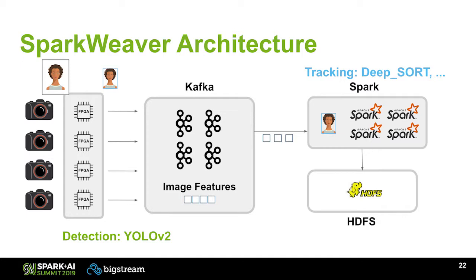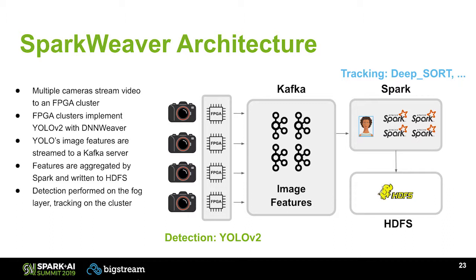In our Spark Weaver architecture, we have detection running on the FPGAs and then we're doing tracking in our cluster. Specifically: we're streaming video from cameras, our FPGA clusters implement YOLO — specifically version 2 — using DNN Weaver, and then we stream the image features, only what's needed by Deep Sort, to the Kafka server, which can then be aggregated for all sorts of offline and online analytics.